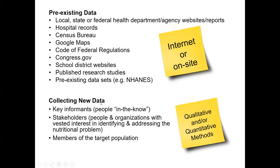Collecting new data can become quite important in conducting a needs assessment. You may ask key informants — people who are in the know about a topic area and can give you valuable information about your target population. In our example of children, maybe we'd talk to the food service director at the school, who would understand the school lunch menus and what children are selecting. Maybe teachers become key informants as well, since they're eating with the students and might have relevant knowledge.